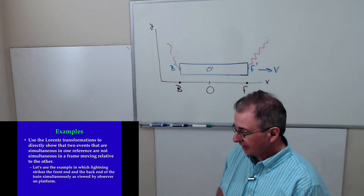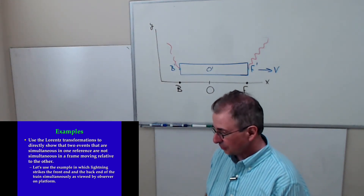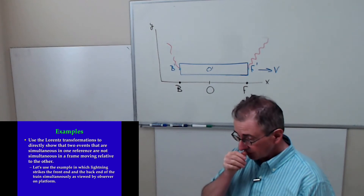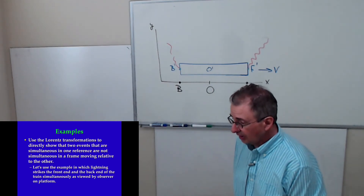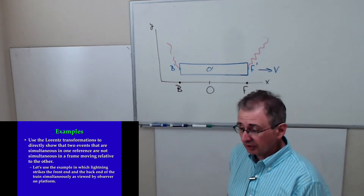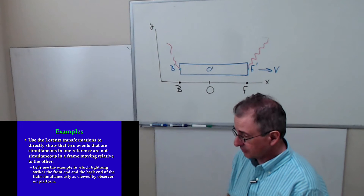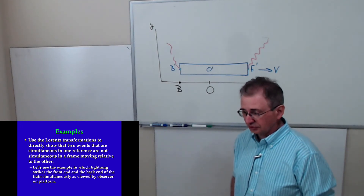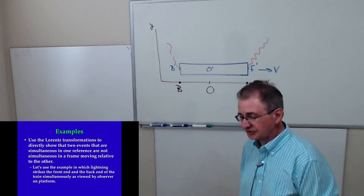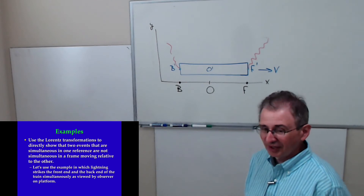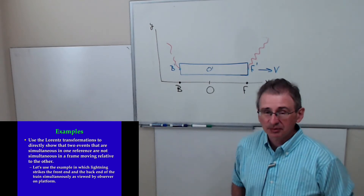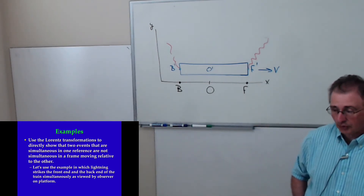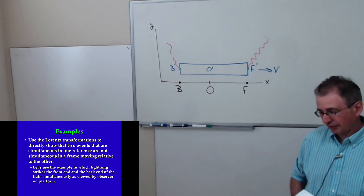What I want to do today is to do the example you see on the screen. I want to use Lorentz transformations to show directly that two events that are simultaneous in one reference frame are not simultaneous in another reference frame that's moving relative to the first.